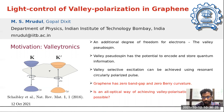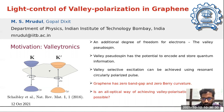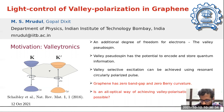But graphene, a very popular two-dimensional material, has a zero band gap and zero Berry curvature. So the question we ask is: can an alternative way of achieving valley polarization be found?